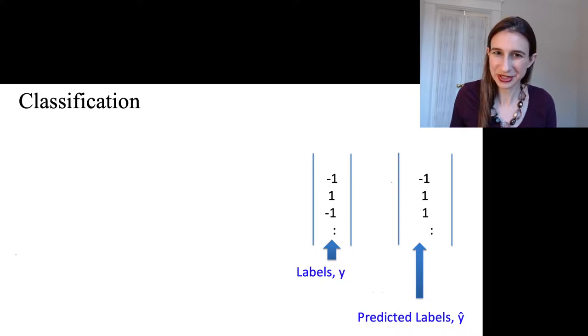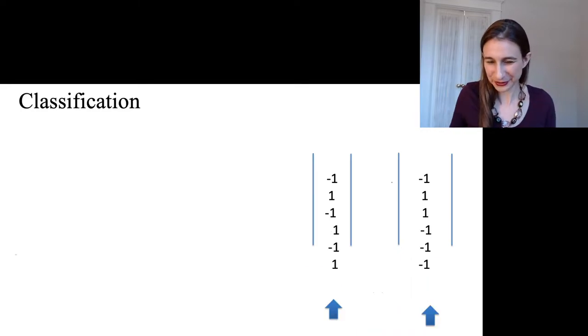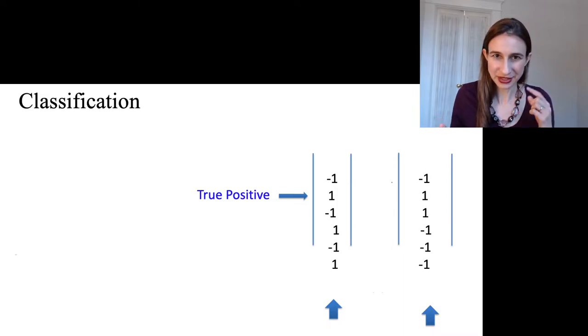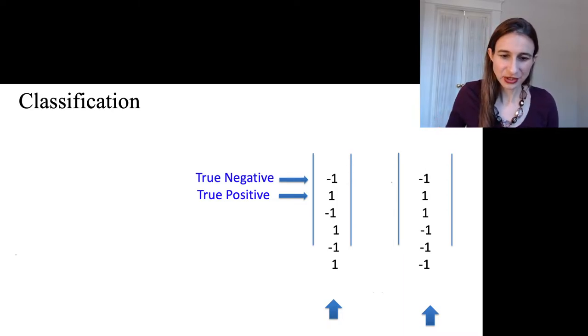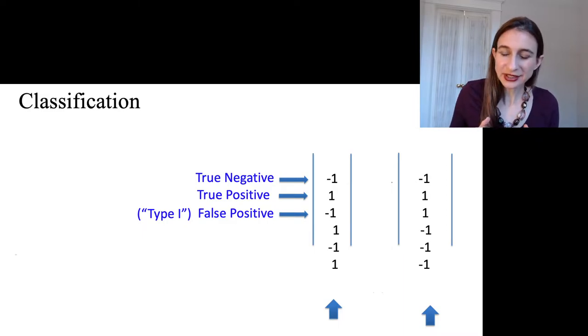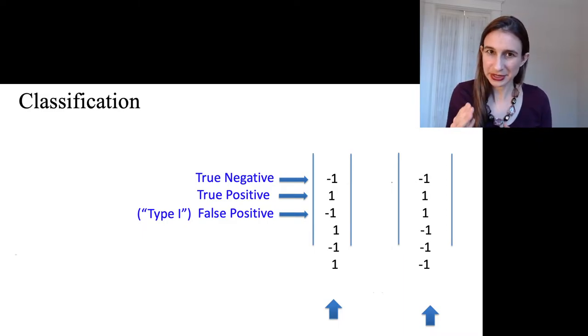Later on we'll do evaluation metrics that depend on the value of the function itself, but for now we're just going to look at the labels and the predicted labels and see how often they agree with each other in different ways. A true positive is when you predict that something's positive and it actually is. A true negative is when you predict that something's negative and it actually is.